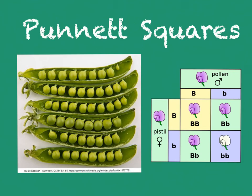This video is about Punnett squares. Punnett squares are a great way to predict the outcome of genetic crosses. I have peas here because peas were the first organisms used to figure out genetics, or the patterns of how traits are passed from one generation to the next.